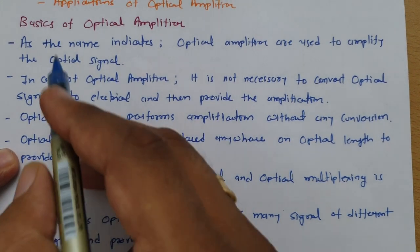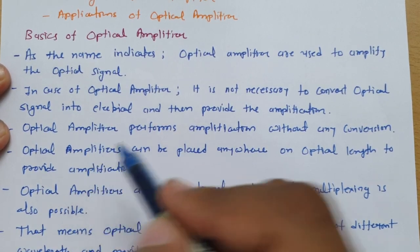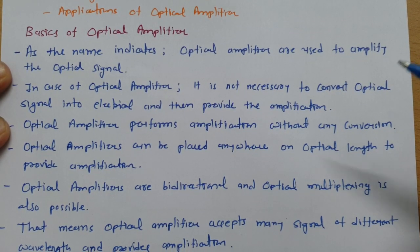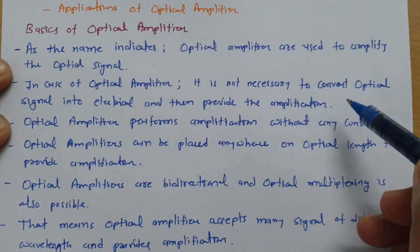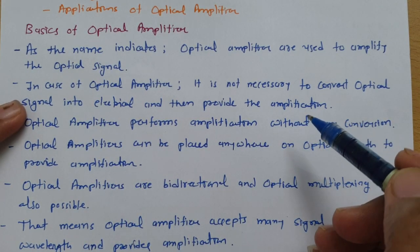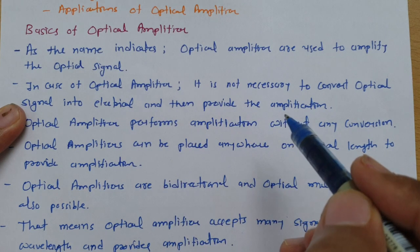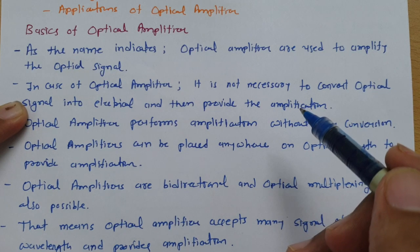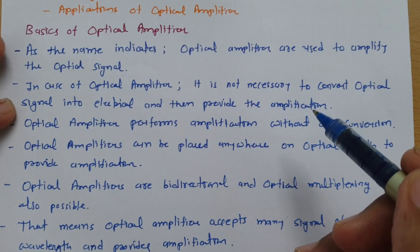As the name indicates, an Optical Amplifier is used to amplify optical signals. In an Optical Amplifier, we amplify the optical signal — not the electrical signal. It is not necessary to convert the optical signal into an electrical signal and then provide amplification. In an Optical Amplifier, without any conversion from optical to electrical signal, we perform amplification.